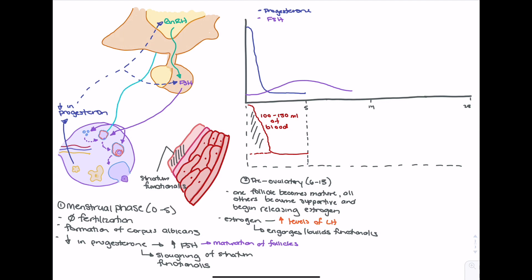The supporting follicles release estrogen, which stimulates the release of GnRH — a massive increase in GnRH leading to luteinizing hormone release. The combined impact of estrogen and GnRH leads to an increase in luteinizing hormone release, which helps stimulate ovulation. Importantly, this phase also sees a decrease in FSH. Though estrogen increases GnRH, estrogen also plays a role in decreasing FSH levels. The supporting follicles also release inhibin, which decreases FSH release — which makes sense as we no longer need follicle stimulation now that we have a mature follicle.